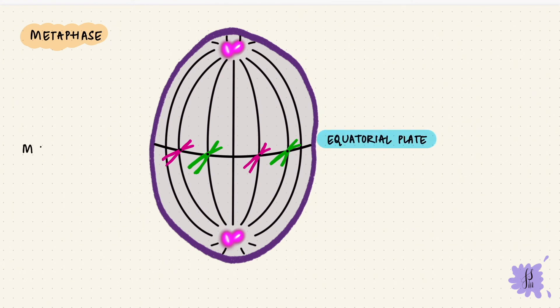Before anaphase, that is between metaphase and anaphase, there is an M checkpoint, or the spindle checkpoint, to see whether the chromatids are all attached to the spindle.